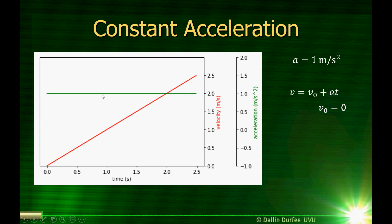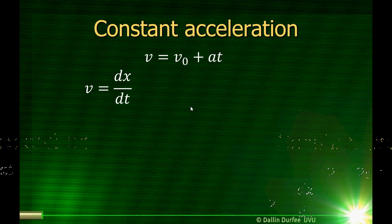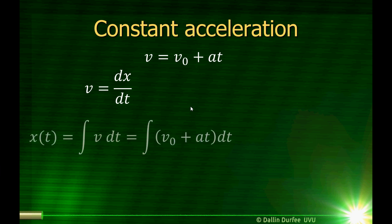Here's a plot. The green line is the acceleration, and the red line is the velocity. As we expect, the velocity as a function of time is just a straight line whose slope is equal to the acceleration. If the velocity is a line whose slope is the acceleration, what is the position? Remember, velocity is the derivative of position with respect to time, so position is just the integral of velocity with respect to time. In this case, velocity is just v-naught plus at.